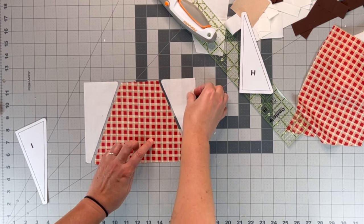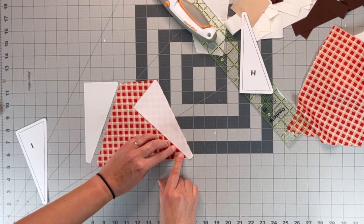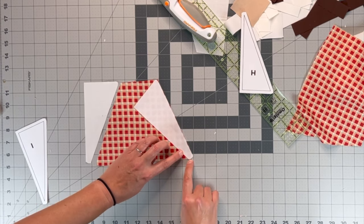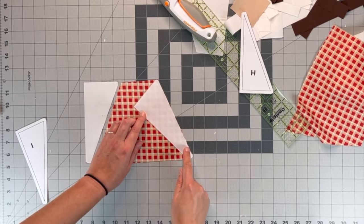So what you do to sew this is, you're going to line up the ends and go ahead and sew it with a quarter inch seam.